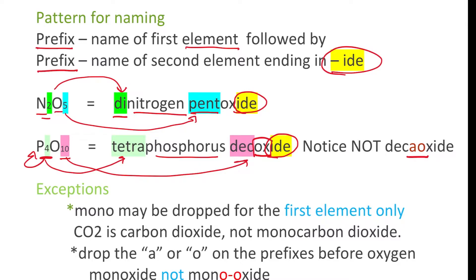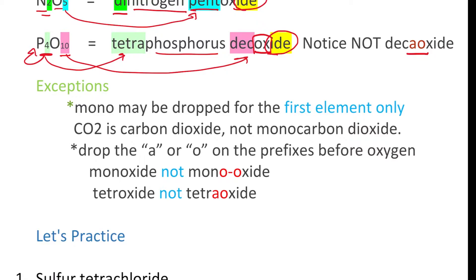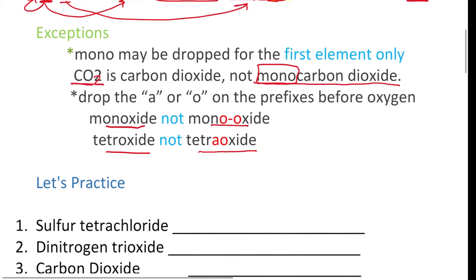With practice these names become very easy to use. Here's a few exceptions. If you start with mono, if you start with one, you drop it from the first element. In other words, the first element never wants mono. So this is carbon dioxide, you wouldn't call it monocarbon dioxide because you don't ever start with mono. Who wants to get mono? The second exception is that you're never going to put an a or an o before oxygen, so it's going to be monoxide, not monoaoxide, and it's going to be tetroxide, not tetraaoxide. So what I do is I just kind of say it in my head and I use the one that sounds less awkward. Tetroxide sounds better than tetraaoxide, monoxide sounds way better than monoaoxide.